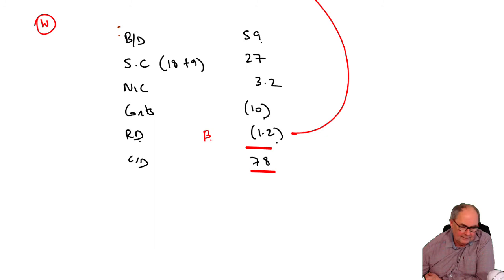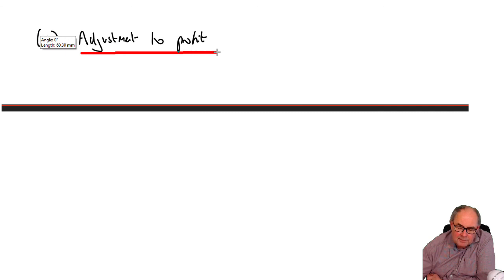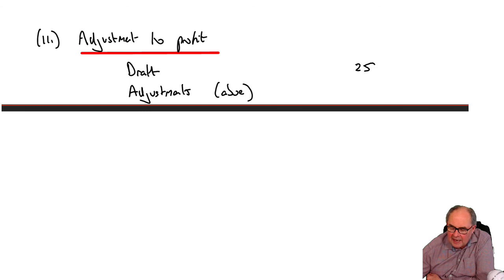Finally, if we come across here, the very last two marks were just about adjusting the profit. You get follow-through marks here, don't you? So you don't need to worry whether all your numbers so far have been wrong, because you'll always get those two marks. So for example, you've got a draft profit. The draft profit, it tells us, was $25. And then adjustments - whatever you've determined above that would make that profit go up or down. A very straightforward two marks at the end of the exam.